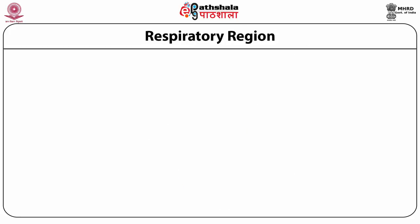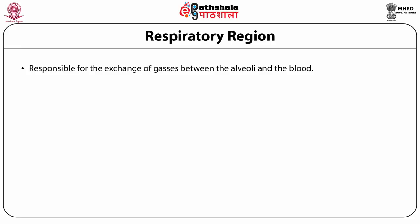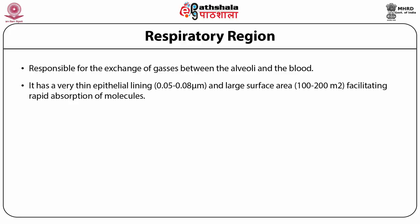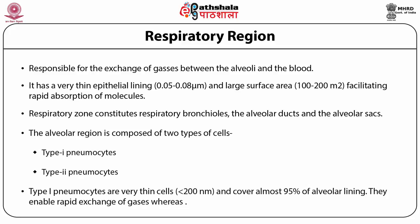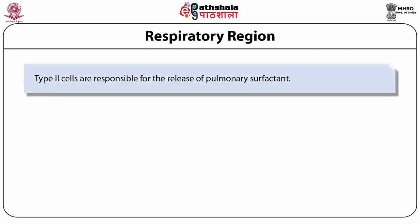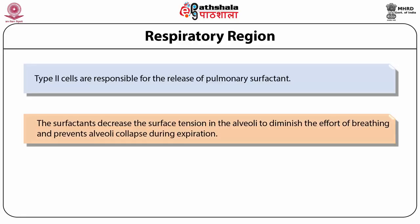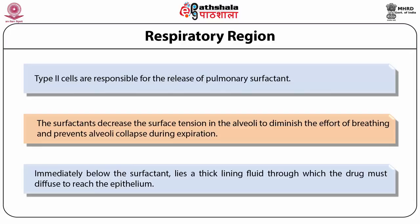In the respiratory region of the lungs, it is responsible for exchange of gases between the alveoli and blood. It has a very thin epithelium lining, about 0.05 to 0.08 micrometers thick, and a large surface area of about 100 to 200 square meters, facilitating rapid absorption. The respiratory zone includes respiratory bronchioles with alveolar ducts and alveolar sacs. The alveolar region has two types of cells; Type 2 cells release pulmonary surfactant, which decreases surface tension to ease breathing and prevent alveolar collapse. Immediately below the surfactant lies a thick lining fluid through which the drug must diffuse to reach the epithelium — this thickness is a major barrier to absorption.